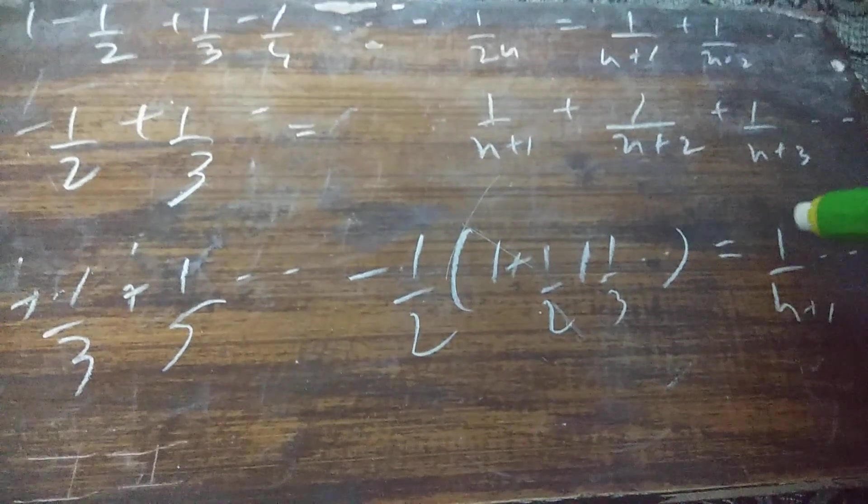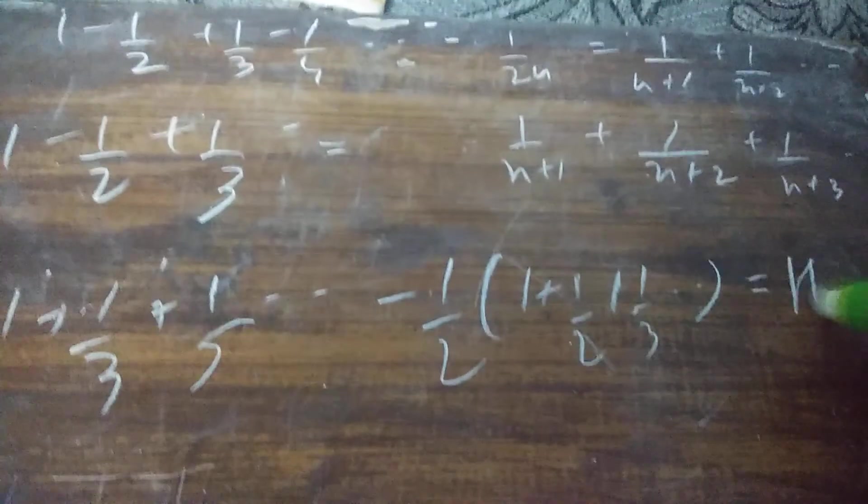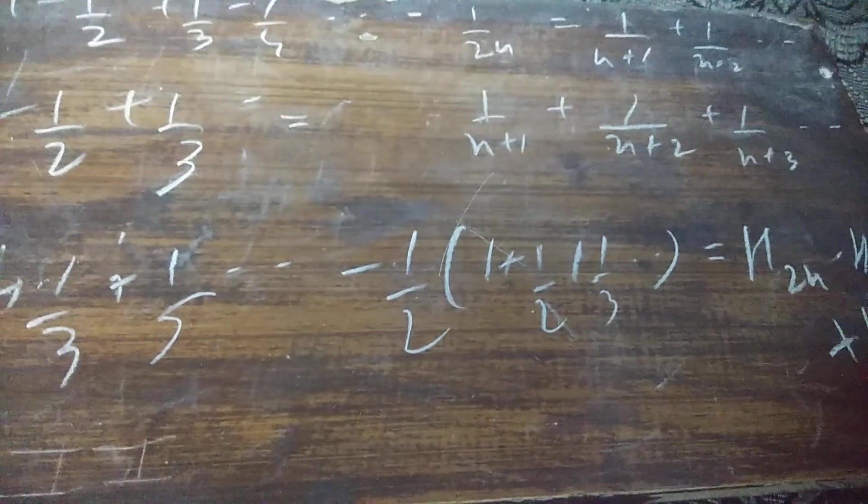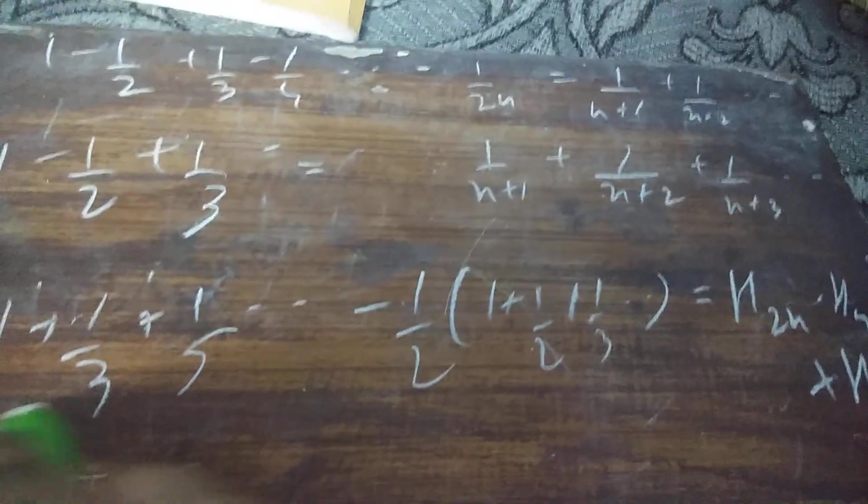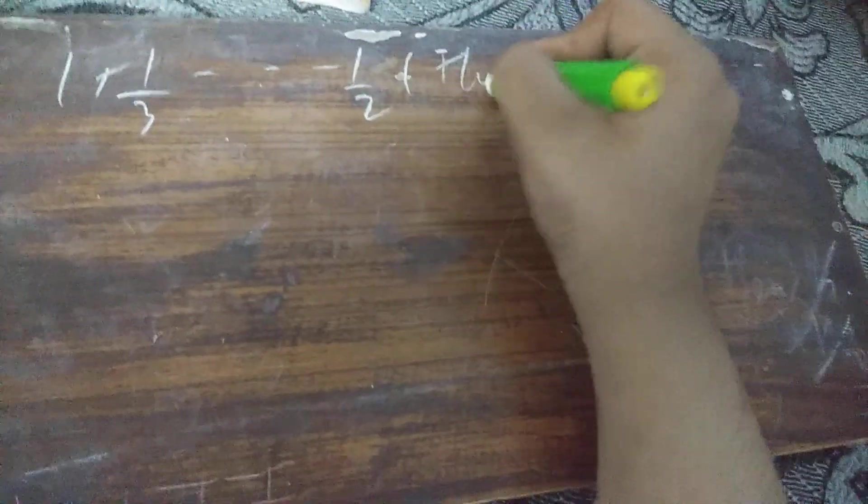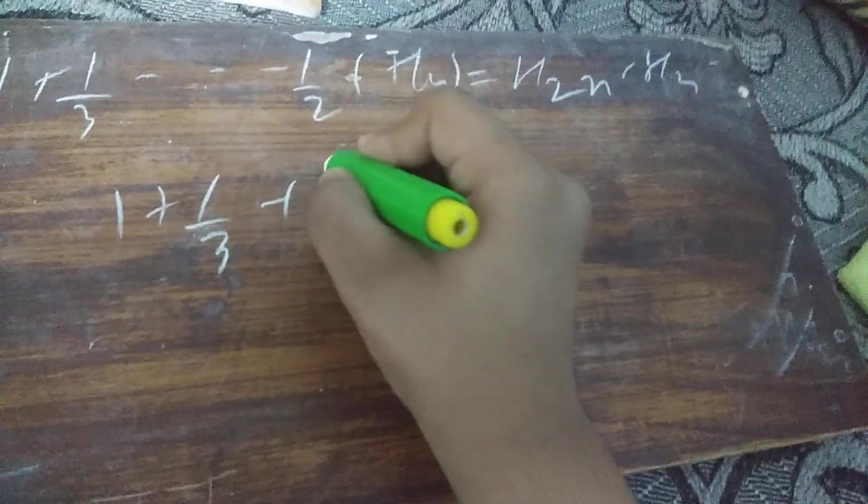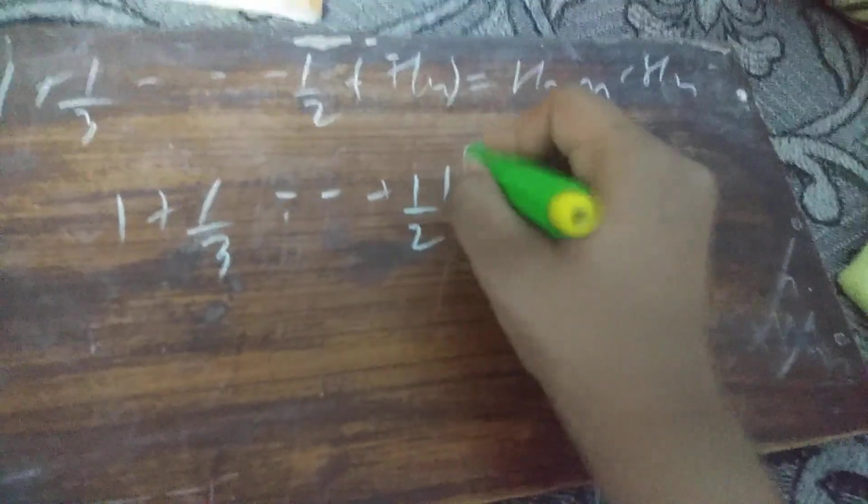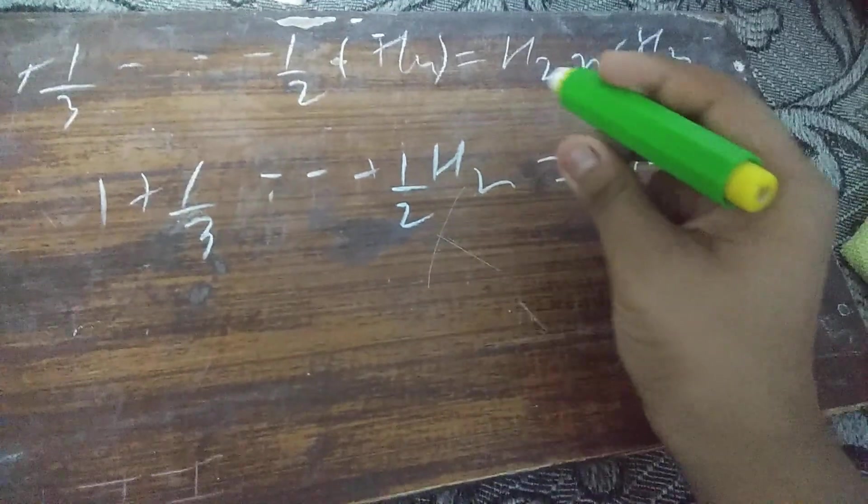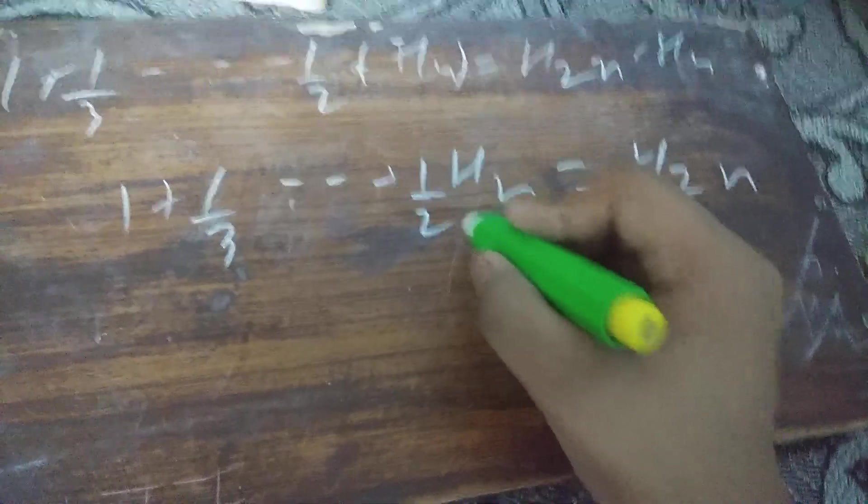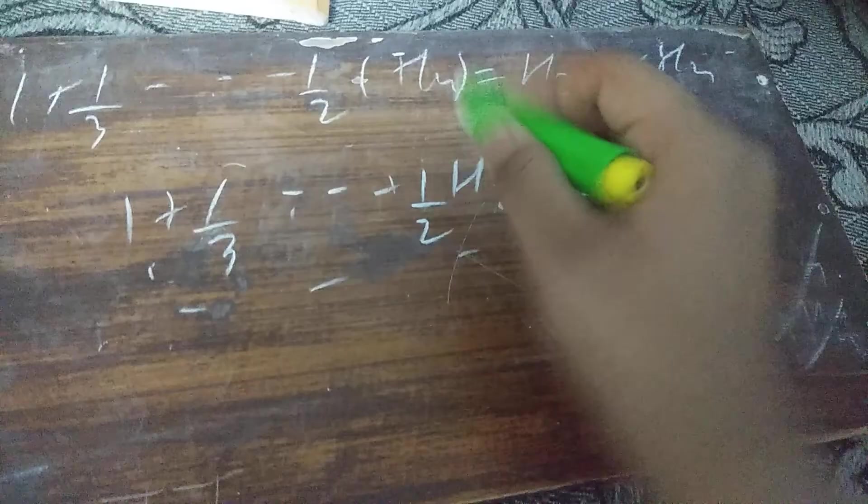Now, H_2n minus H_n, we are adding H_n to both sides so that the terms cancel and we get H_2n on one side. The left side becomes 1 + 1/3 + dot dot minus 1/2 times H_n. This equals the missing terms which is H_2n.